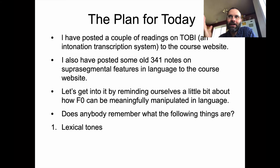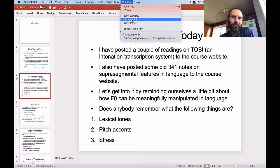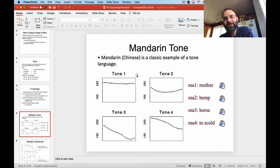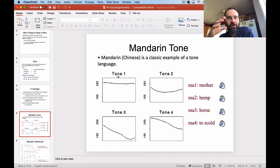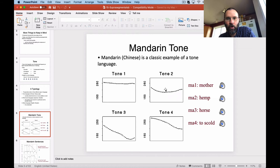Tones — they have those in, say, Mandarin, right? And yes, they do. Here's an example of a tone language: Mandarin. This is how F0 is used to make meaningful distinctions in the language. Each crucial part of a tone language is that each syllable or word is going to have a characteristic F0 contour associated with it. In Chinese there are four basic tones.